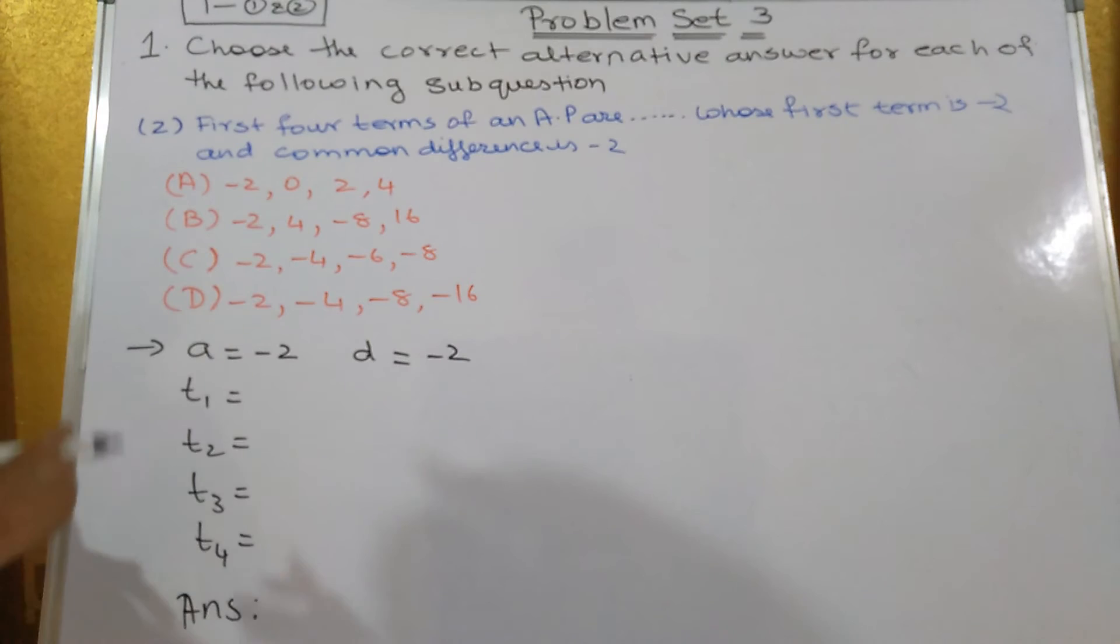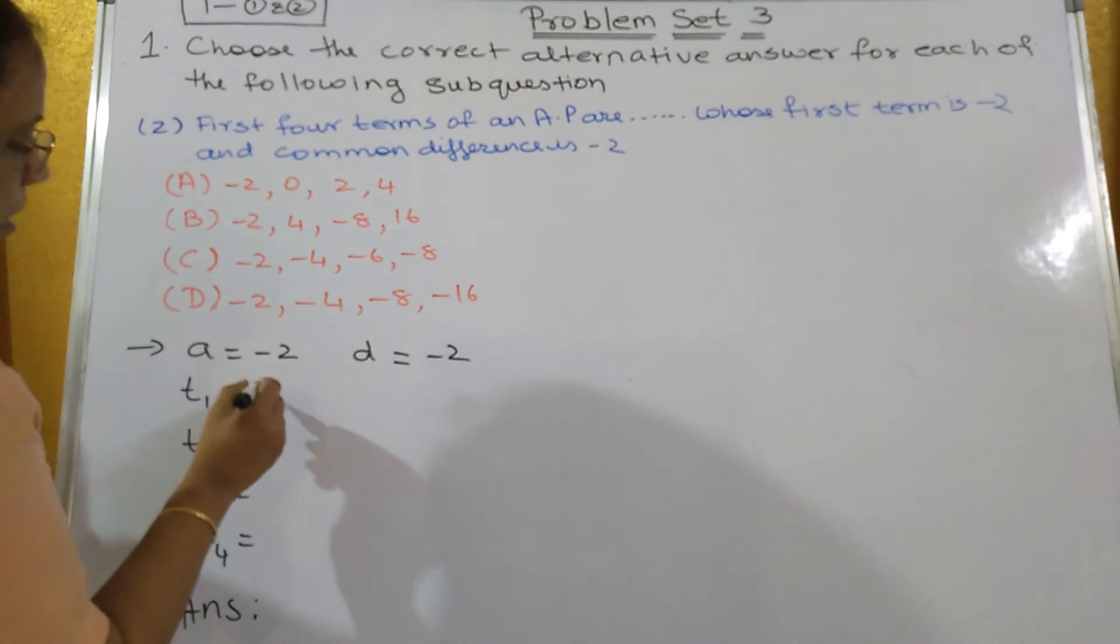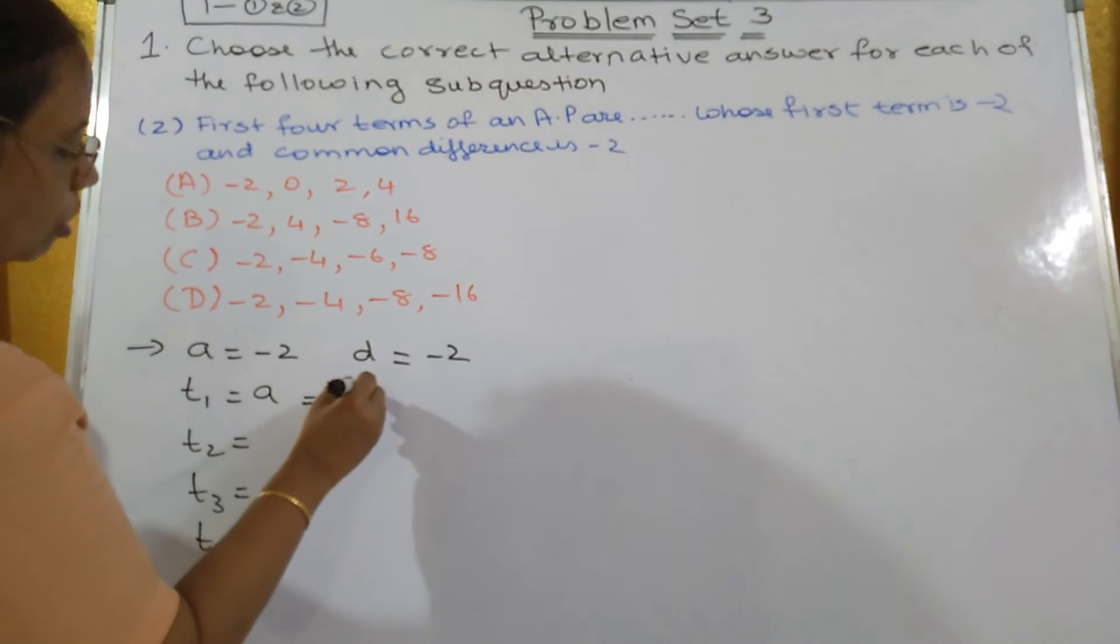Now, the second one, you have to choose the correct alternative. They have asked you to find out the 4 terms of an AP whose first term A is equal to minus 2 and D is equal to minus 2. So, T1 is always equal to A, so that's equal to minus 2.